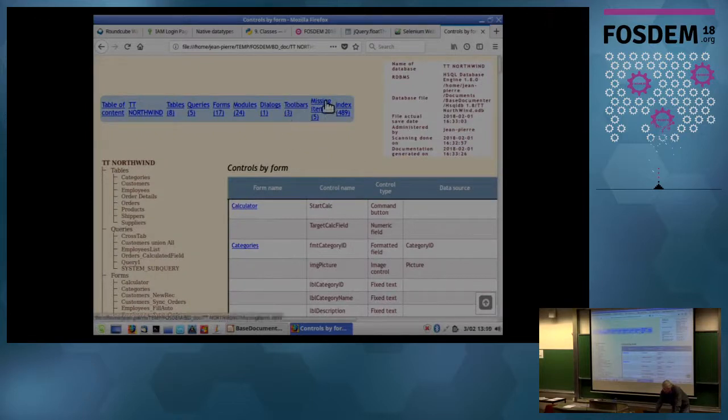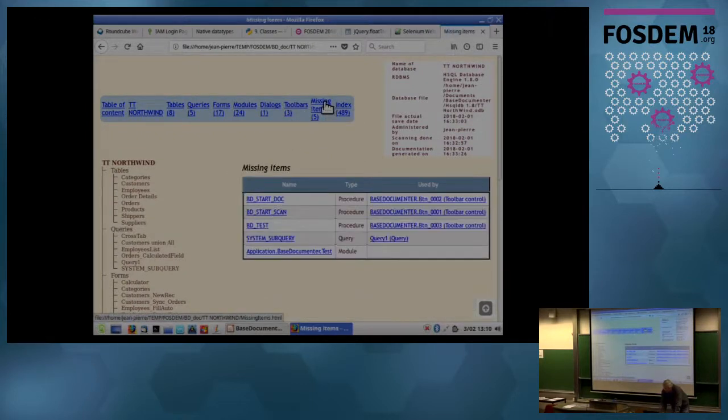I just want to show also that you can identify by this tool a number of items that are missing, because they are used somewhere, but they are not found by the tool. And you have also a full index of all the items found. So there are, here, almost 500 names identified in the application as well. So, I go back to my slides.